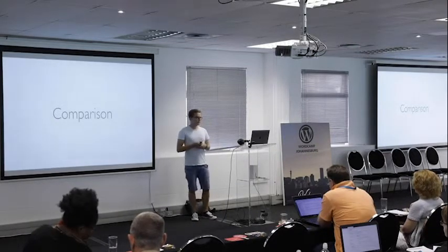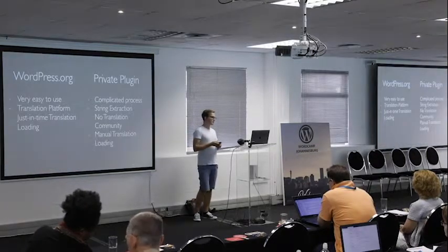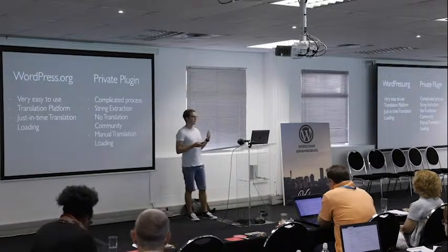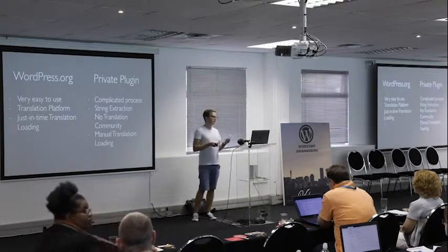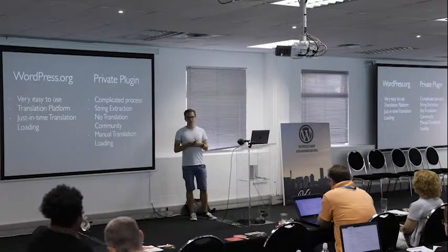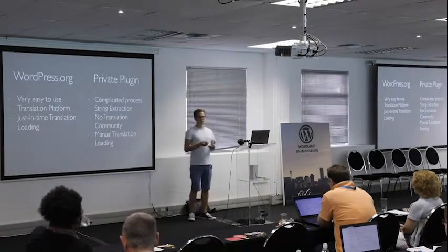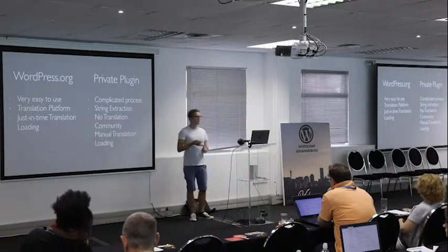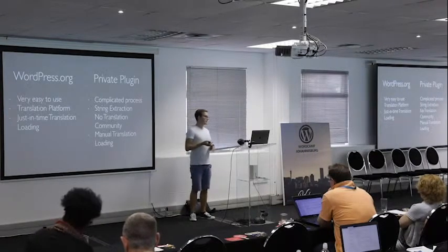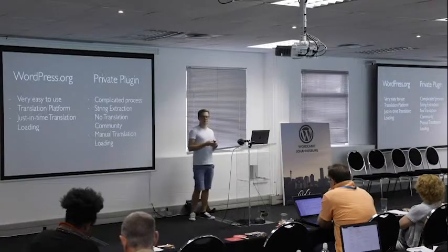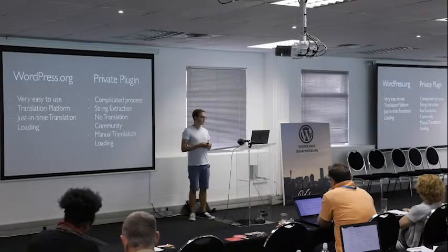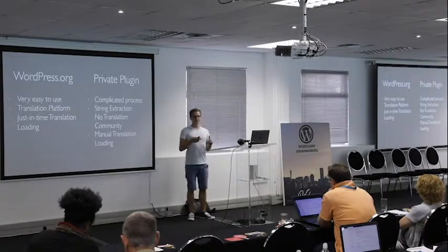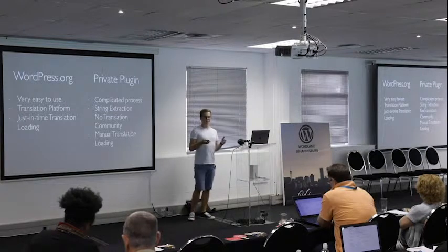Comparing the two options side by side, WordPress does lots of heavy lifting for us when we publish on WordPress.org. For private plugins, the whole process is rather complicated — we have to handle string extraction and translation ourselves. With WordPress.org, we get access to a large community of translators, plus just-in-time translation loading, where WordPress only loads translations when needed. That doesn't happen for private plugins.